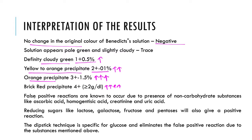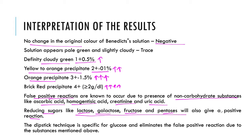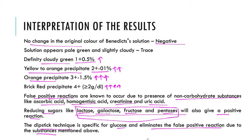False positive reactions can also occur due to the presence of non-carbohydrate substances such as ascorbic acid, homogentisic acid — which is an acid produced due to a metabolic disorder — and creatinine and uric acid. Reducing sugars like lactose, galactose, fructose, and pentose will also give a positive reaction, so if these are present instead of glucose, it can give a false positive result. The dipstick technique is specific for glucose and eliminates false positive reactions due to substances like lactose, galactose, fructose, and pentose.